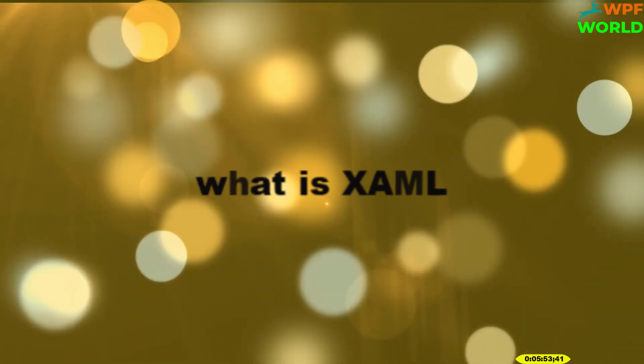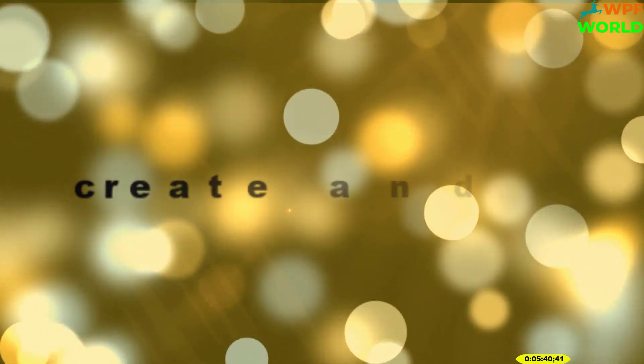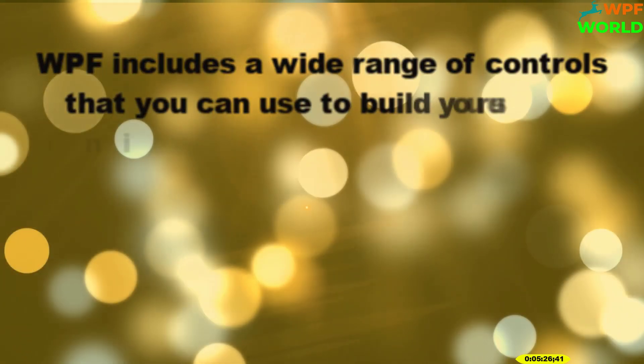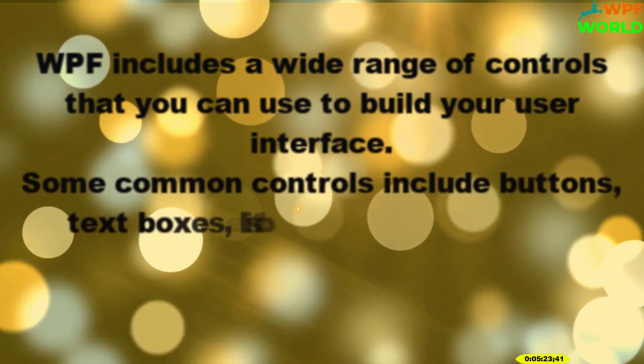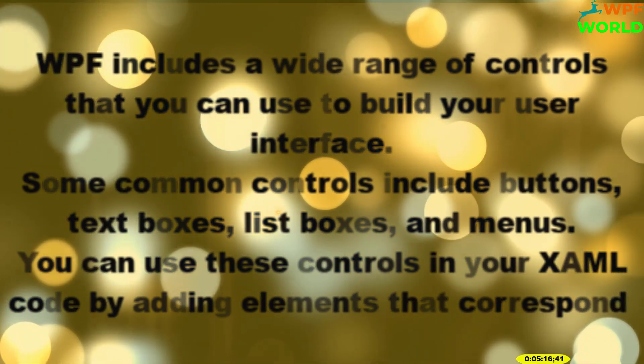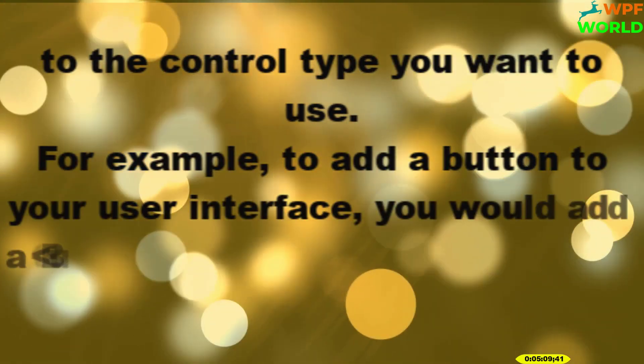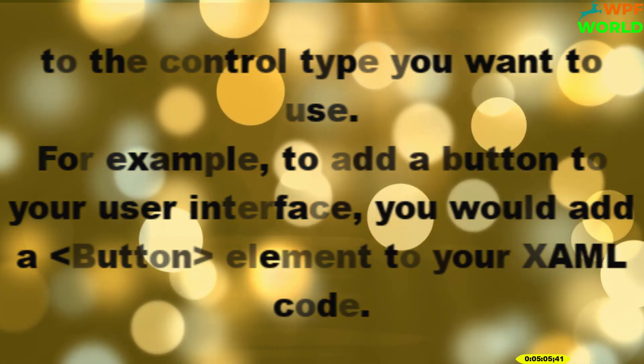Let's understand what is XAML. WPF uses Extensible Application Markup Language, that is XAML, to define the user interface of a WPF application. XAML is a declarative markup language that is used to create and initialize objects, as well as set properties and events on those objects. You can think of XAML as a way to describe the structure and content of a user interface in a simple, human-readable format. WPF includes a wide range of controls such as Button, TextBox, TextBlock, ListBox, and Menu. You can use these controls by adding elements to your XAML code that correspond to the control type you want to use.